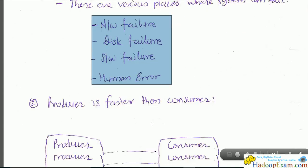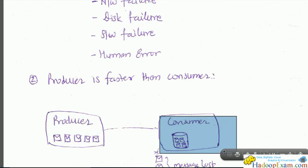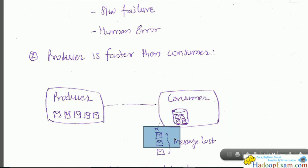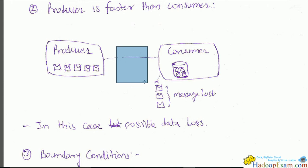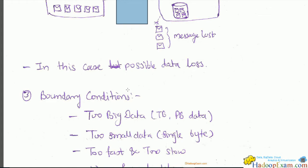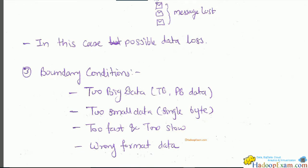Another challenge: the producer is faster than the consumer. If your producer is pushing data at a high volume but the consumer is very slow, you could lose data. NiFi provides connection buffers in between so that if the consumer is slow, messages are saved in those buffers preventing data loss — this is out-of-the-box functionality. Boundary conditions also happen: too-big data, too-small data, too fast, too slow, wrong format — these are all common problems in data flow and are handled in NiFi.